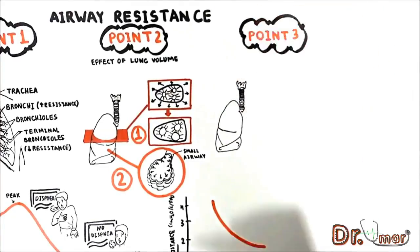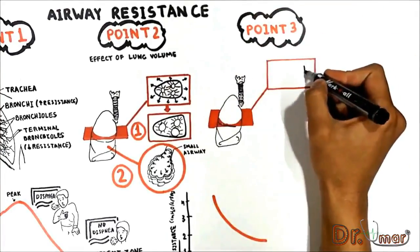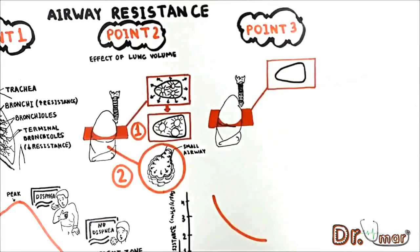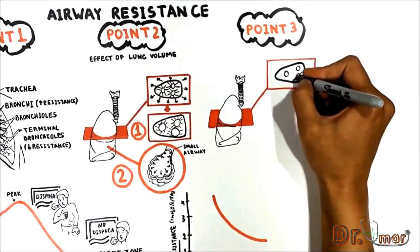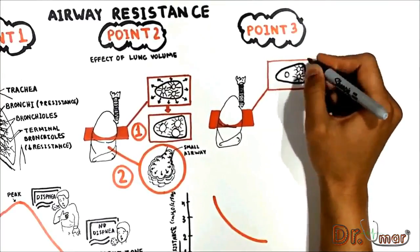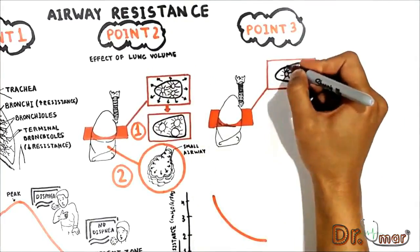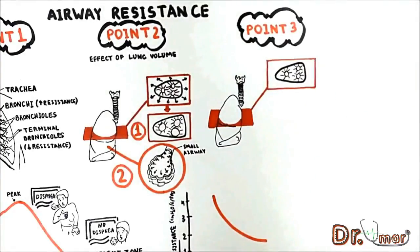The third point. Again, this is a cross section of the lung and this represents a small airway within the lung tissue. The airways are attached to the lung tissue and therefore during expiration they tend to keep them open and prevent them from collapsing.